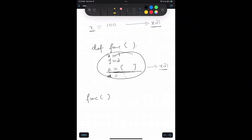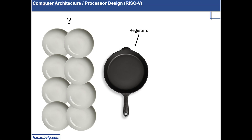The same concept applies here. If you have to use a register space — let's say x21 — the original contents of x21 must be saved somewhere. We're already running out of registers, so we store them into memory. Memory is huge in size, so we can spill those contents into memory, use the registers for the current function, and once the function is over, retrieve those contents back and restore the original values of x21 or whatever registers were used.